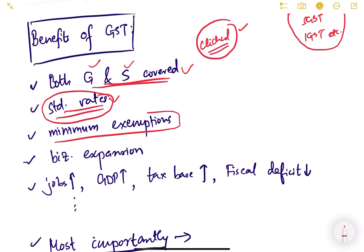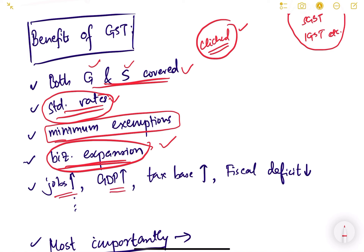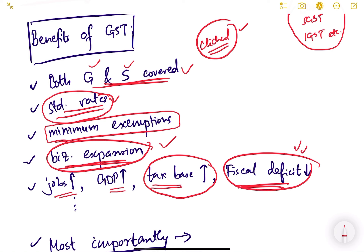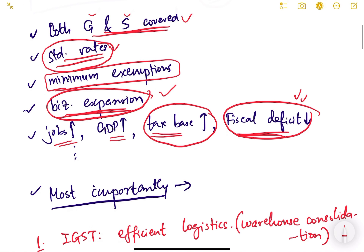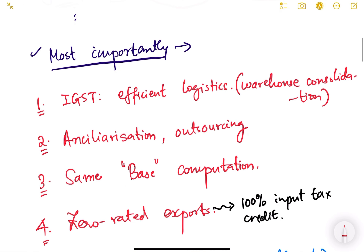There are minimum exemptions allowed in this tax structure, so the tax base of the economy has increased and government revenue has increased. It is also good for doing business — business expansion is possible, jobs have increased, GDP will increase, and the tax base increases. If government revenue increases then fiscal deficit will decrease. These are the obvious benefits of GST, but there are some more important benefits to discuss in detail.